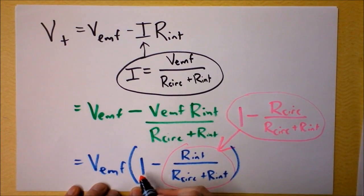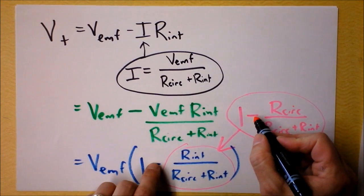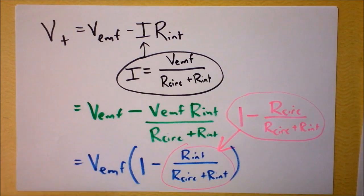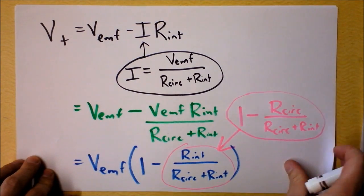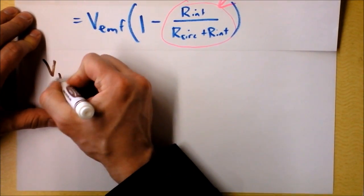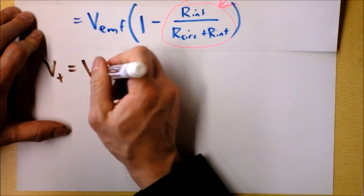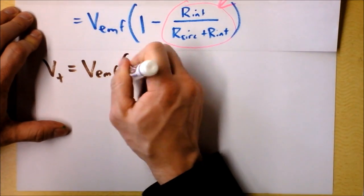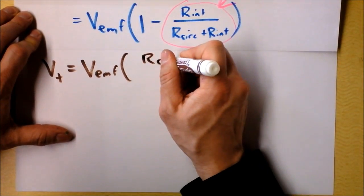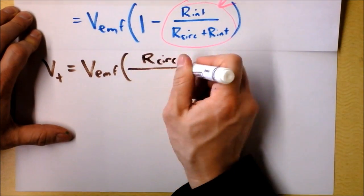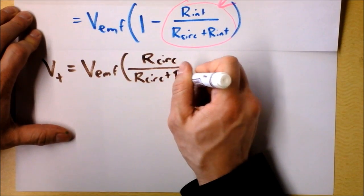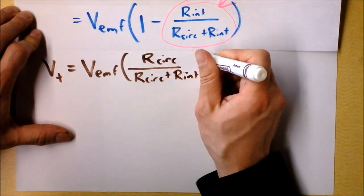I want to say now that the terminal voltage is V_EMF times, now in parentheses, I just have that thing right there, the resistance of the circuit over the resistance of the circuit plus the resistance internal to the battery.